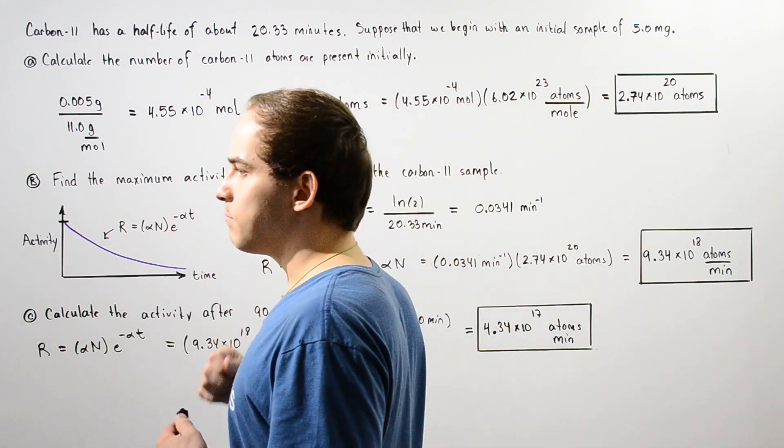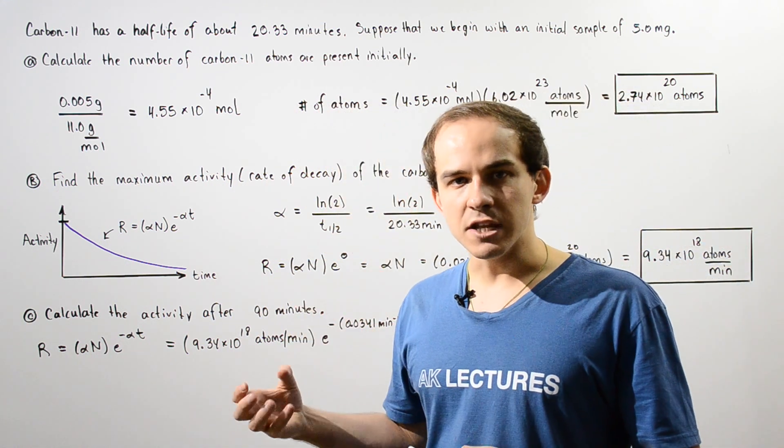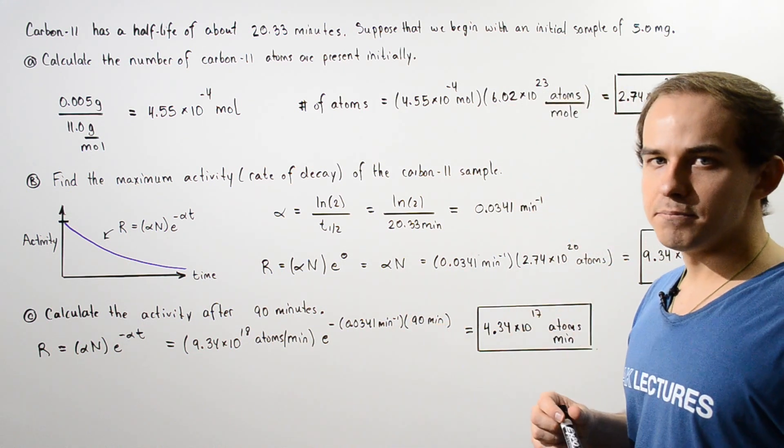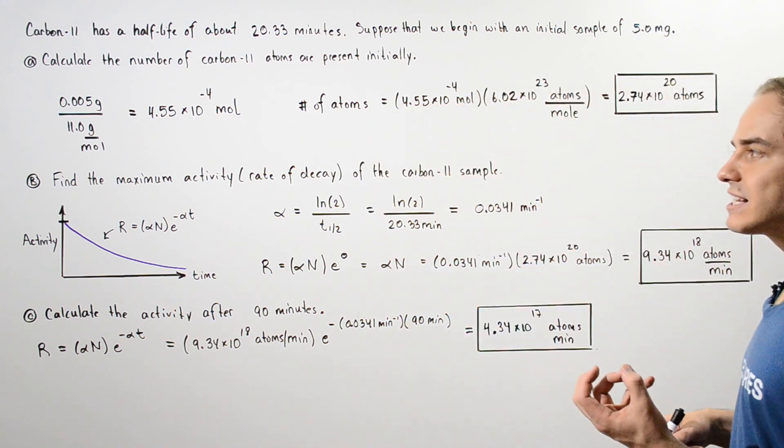Now let's move on to part B. We want to find the maximum activity, the maximum rate of decay of the carbon-11 sample. Now at what time can we calculate the maximum activity?